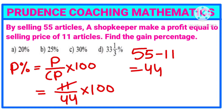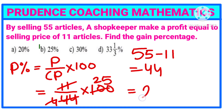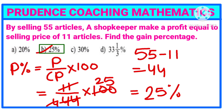We have 11 over 44 multiplied by 100. Since 4 times 25 equals 100, dividing by 4 gives us 25. So our answer is 25 percent, that is option B.